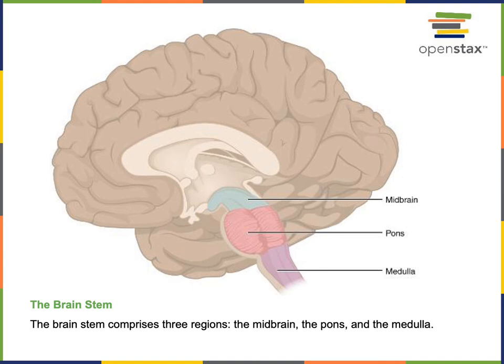Inferior to the pons, the medulla oblongata connects the brain to the spinal cord and contains several important control centers that regulate vital reflexes. For example, the medulla oblongata contains a cardiovascular control center involved in regulating the heart. It also contains a respiratory control center that together with the nuclei of the pons regulates the respiratory drive to control breathing. There is also a deglutition center regulating swallowing, a control center coordinating vomiting as a reflex, and coughing is another reflex coordinated by a control center in the medulla oblongata.